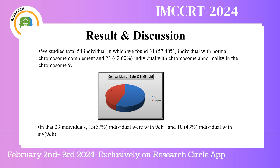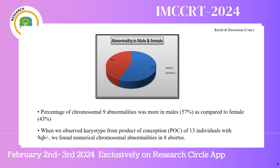The 10 individuals showing inversion 9: among them, 1 individual had dysmorphic features while others had multiple miscarriages. The percentage of Chromosome 9 abnormality was more in males compared to females.